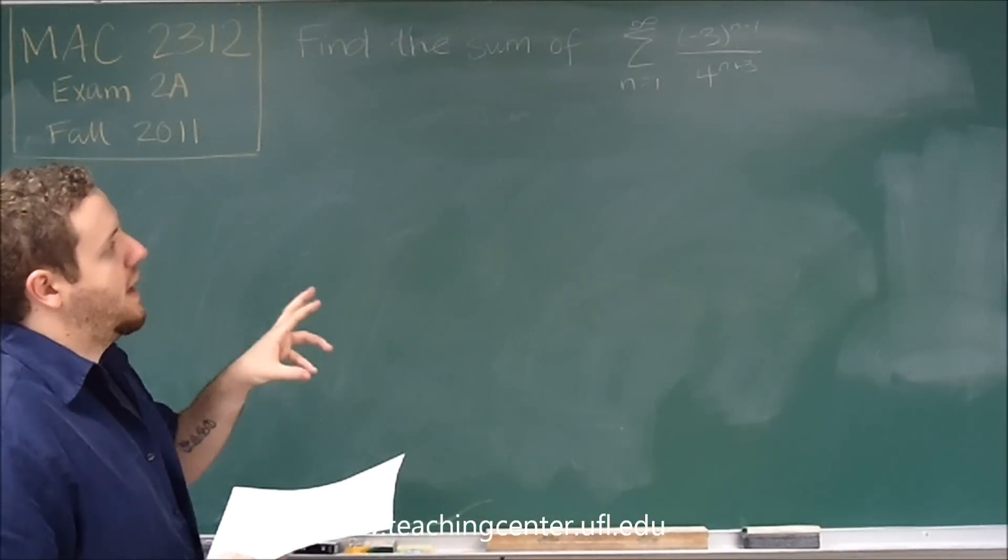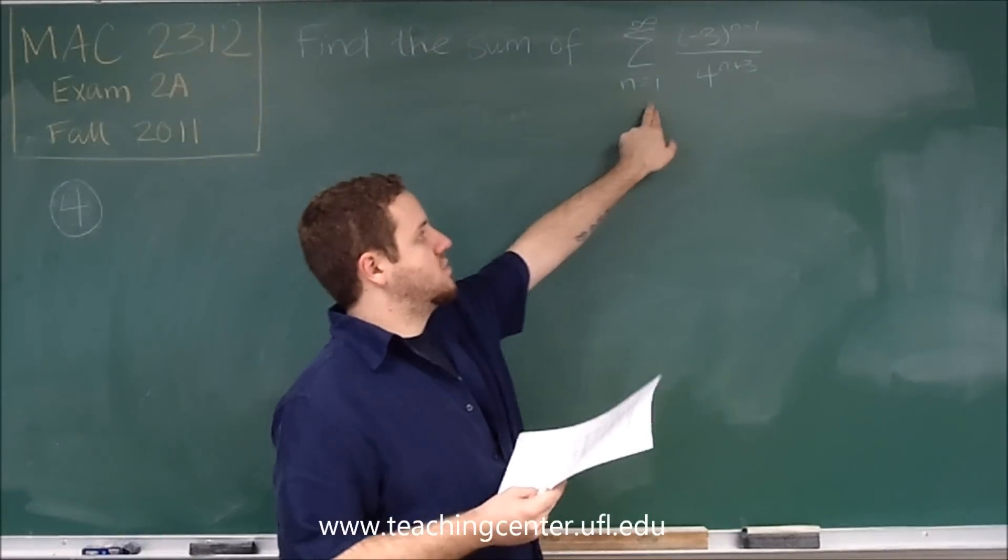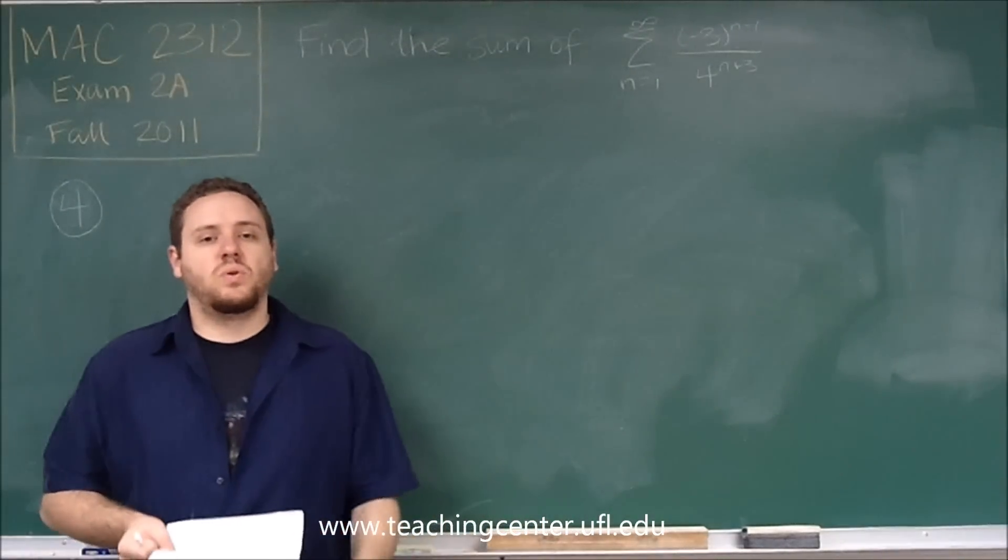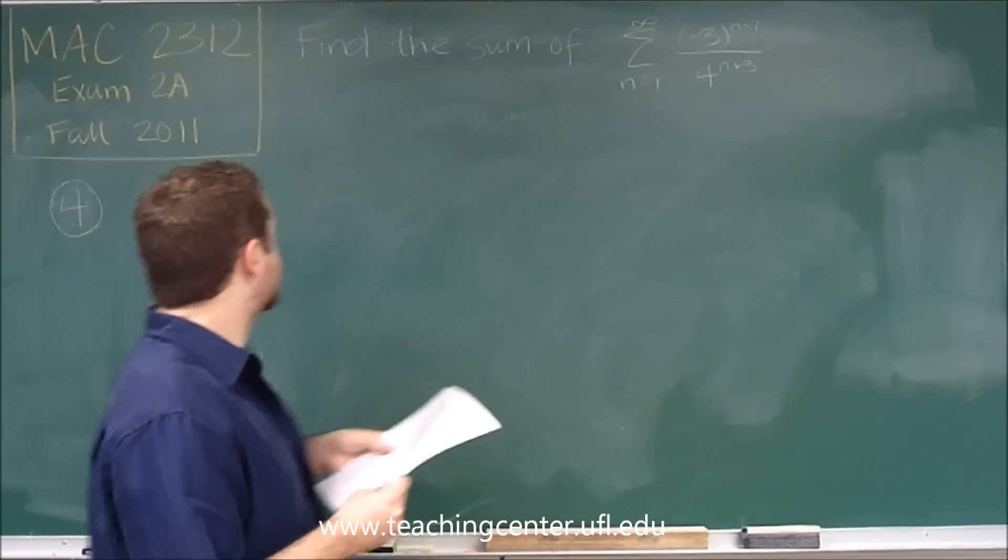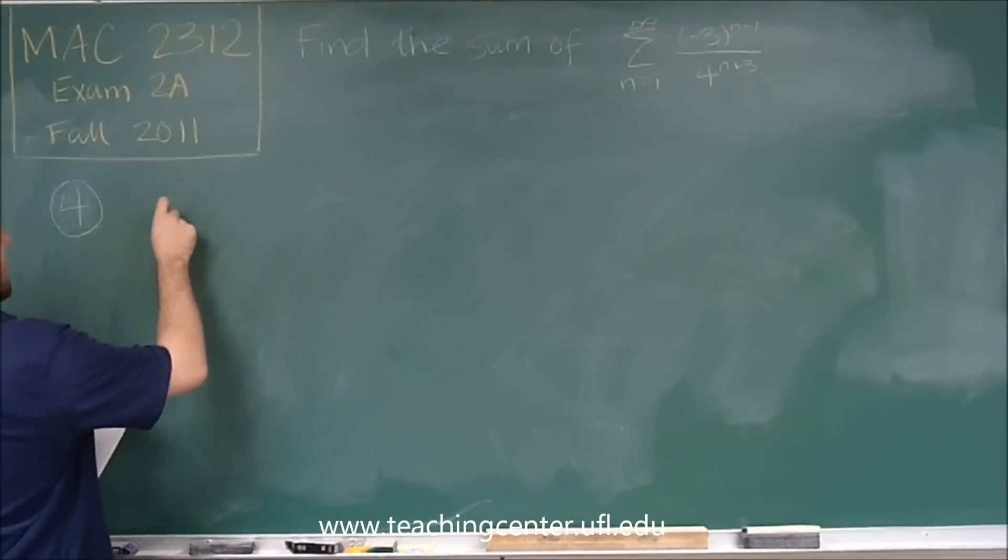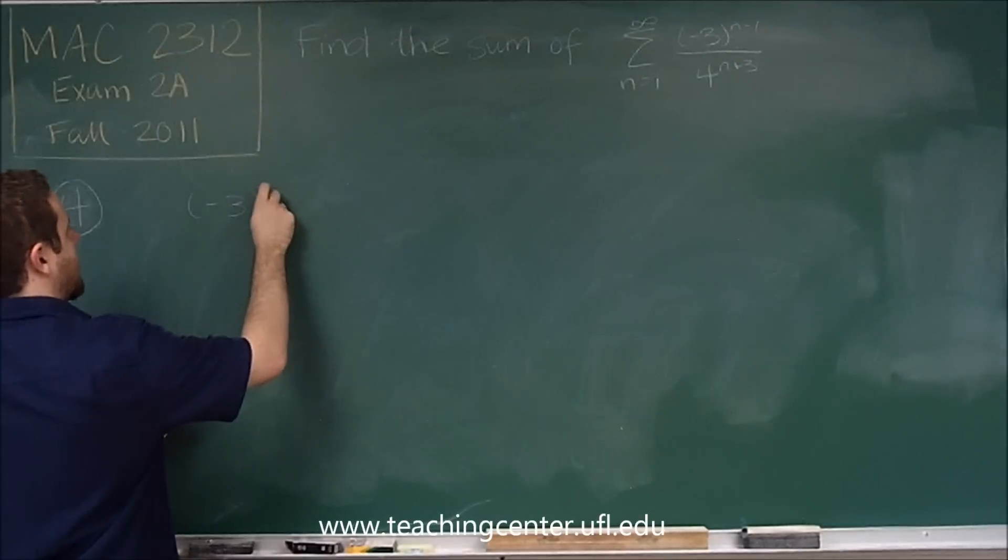So what we need to do is get both powers to be n minus one, because we're starting at n equals one. So if the power is n minus one on a geometric series, we have a formula that tells us how to figure out that sum. So we want to leave the numerator as negative three to the n minus one.